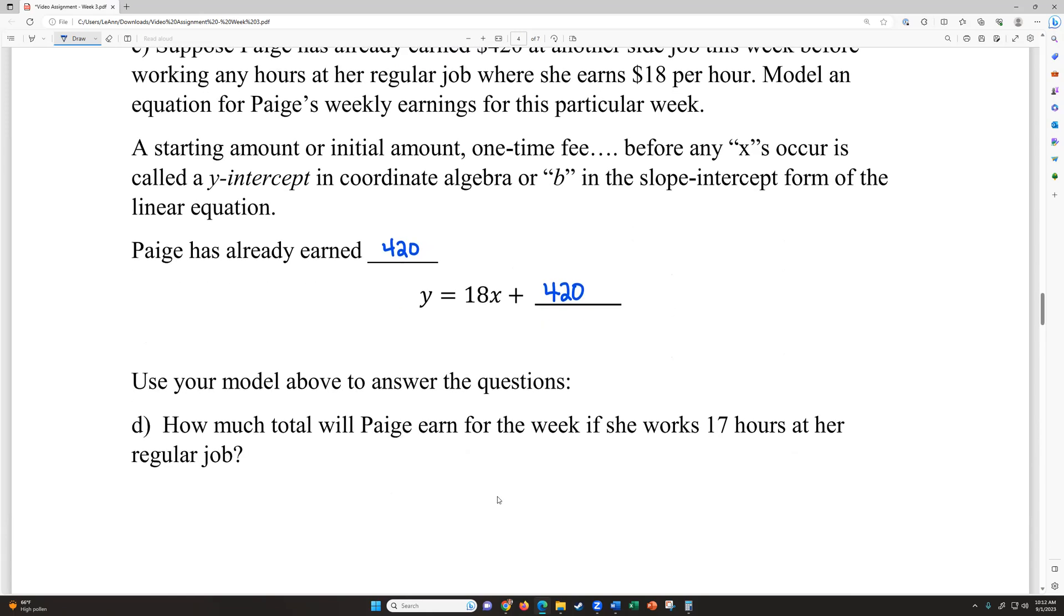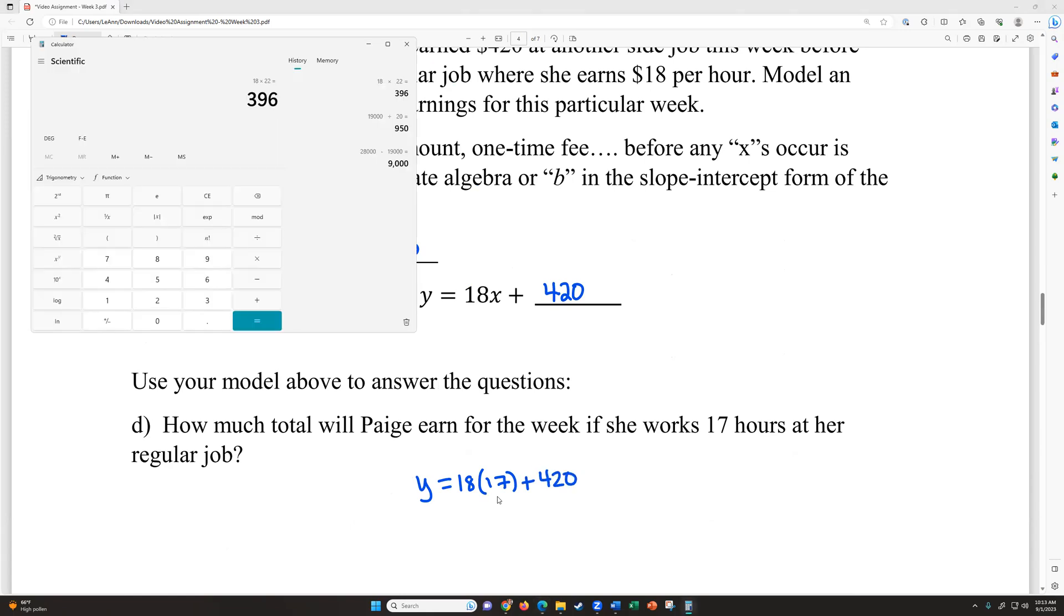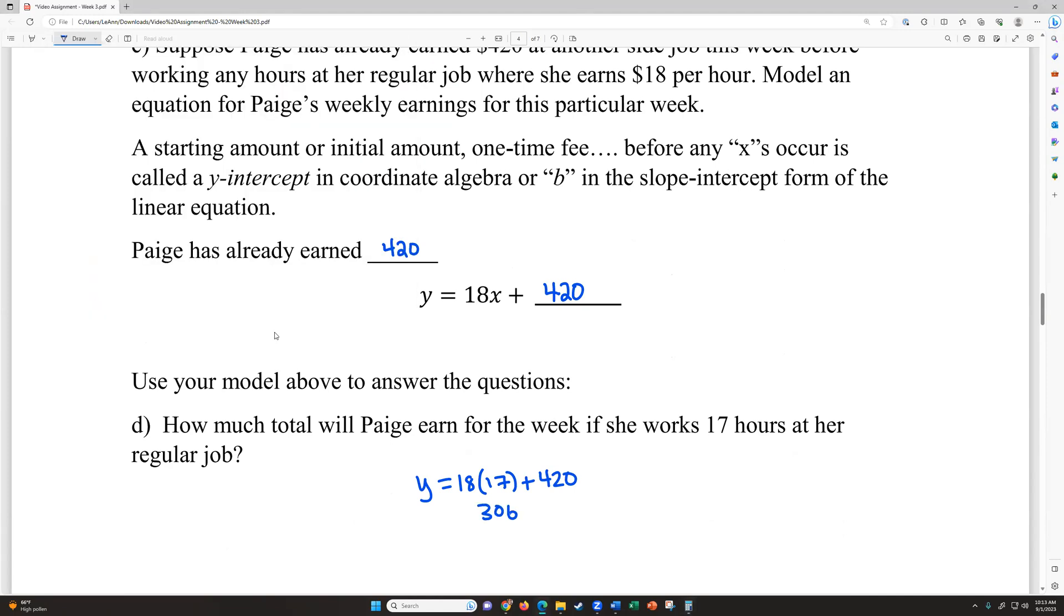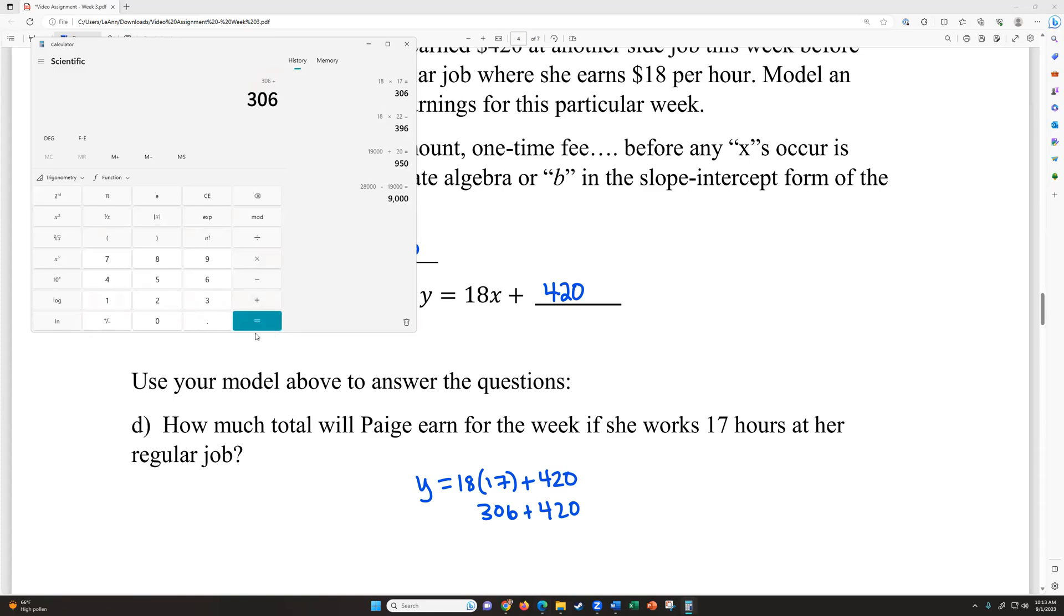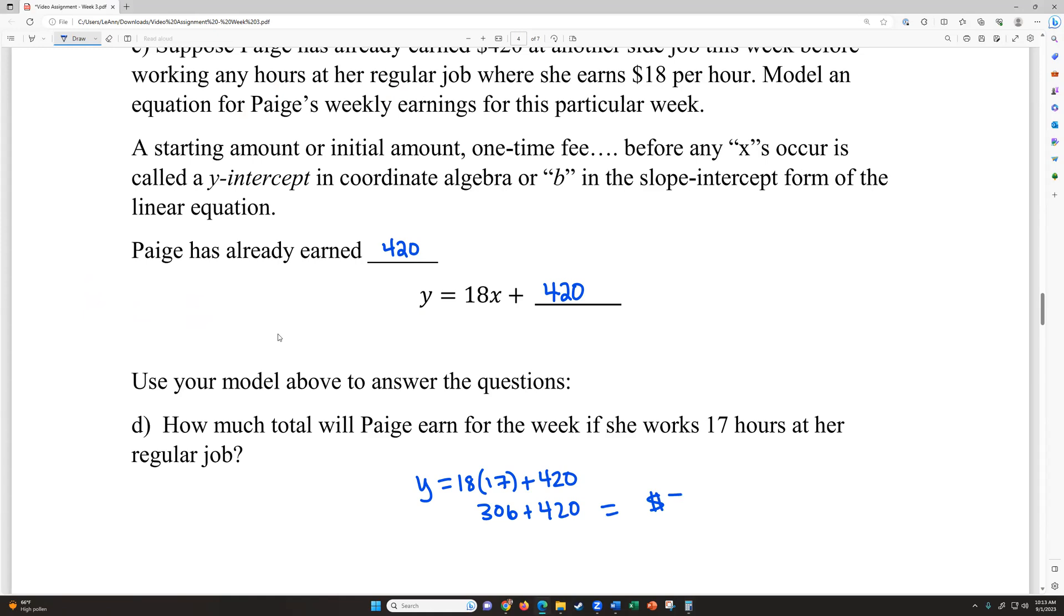So how much total will Paige earn for the week if she works 17 hours at her regular job? She would have $18 an hour for 17 hours, plus the total money she already had deposited. So 18 times 17 is $306 plus $420 is $726.